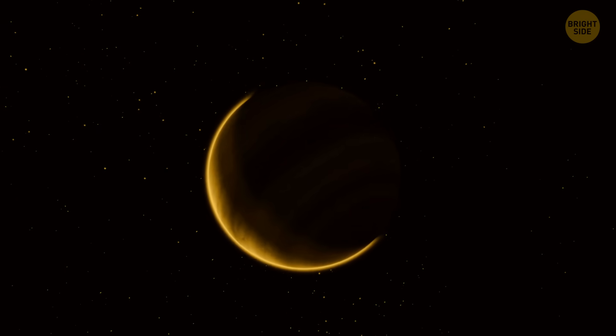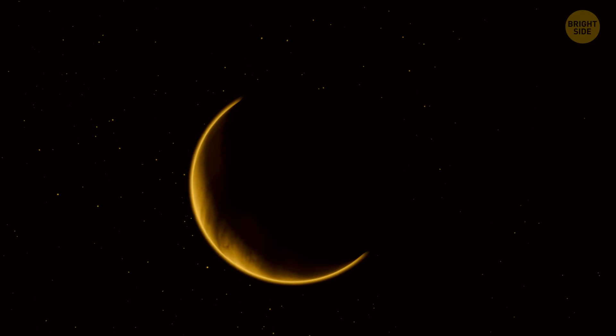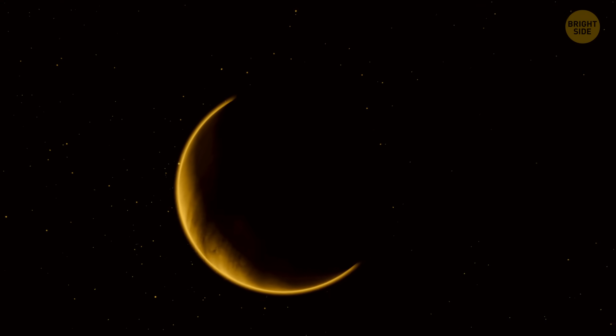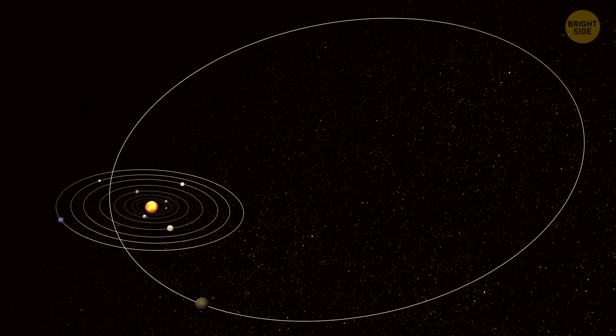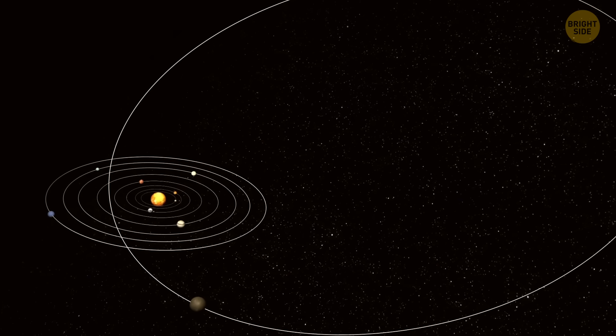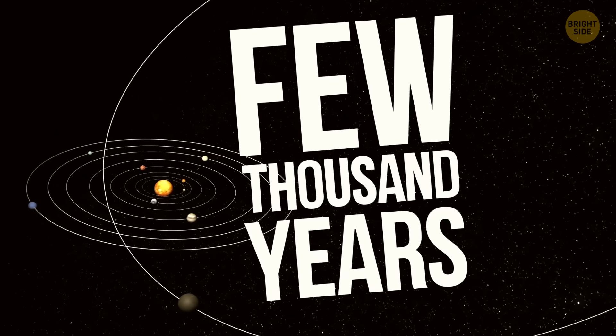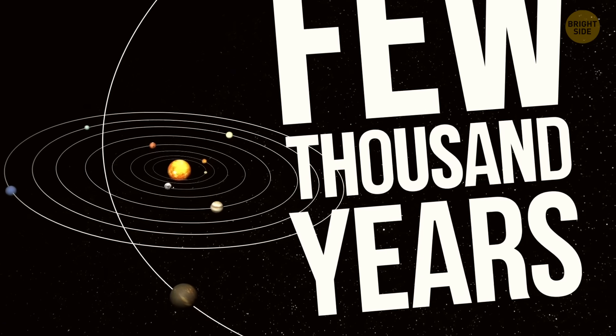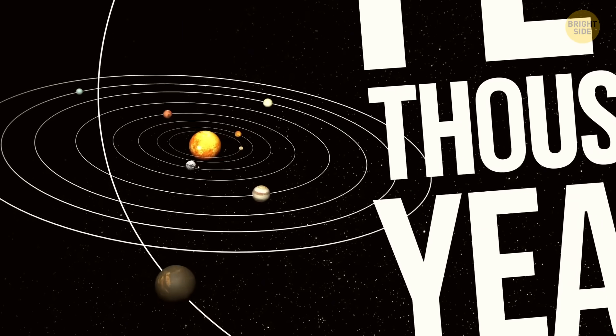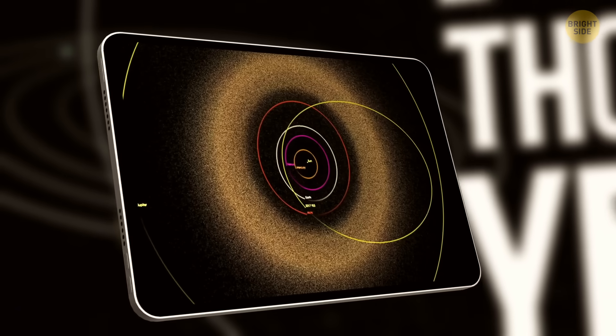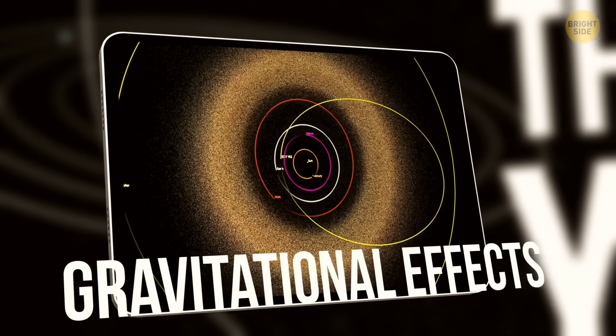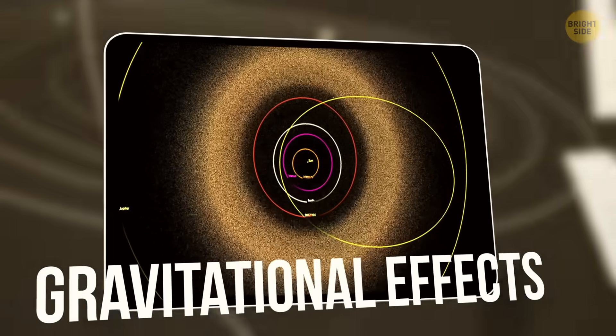Because of this, Planet 9 might spend most of its time far from the Sun, like a true introvert. It only comes relatively close to the inner solar system every few thousand years. This would make it super faint and hard to spot. So, the only way we may discover it is by studying the gravitational effects it has on our solar system.